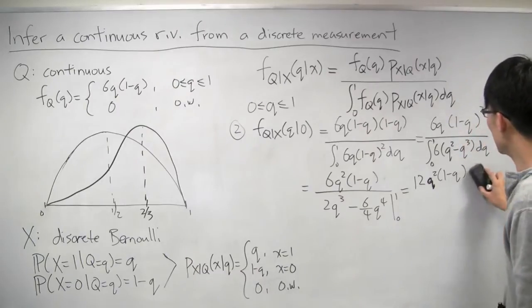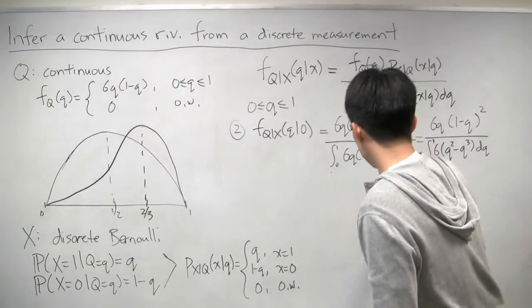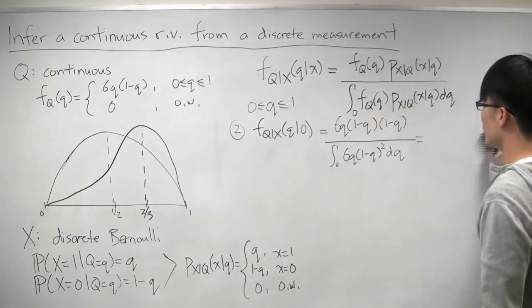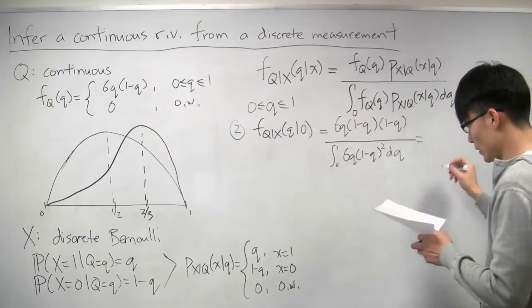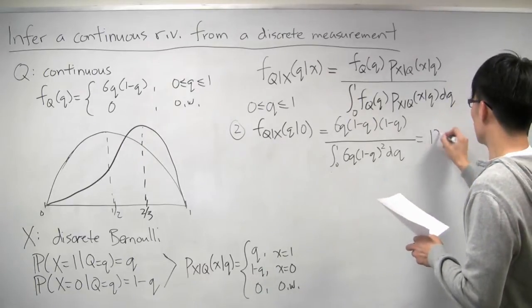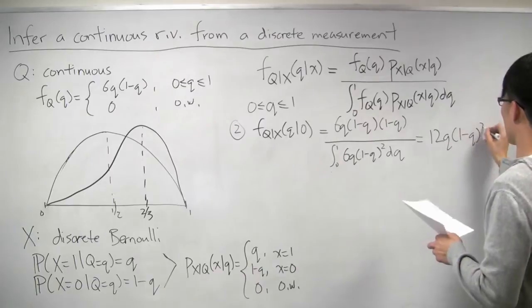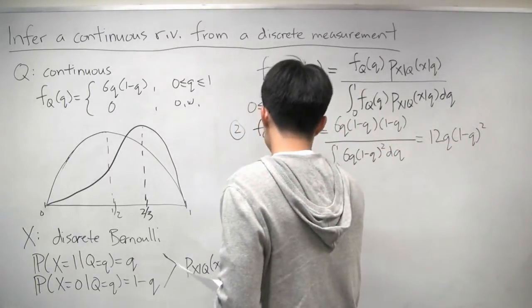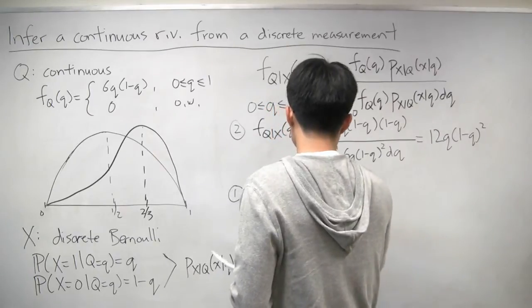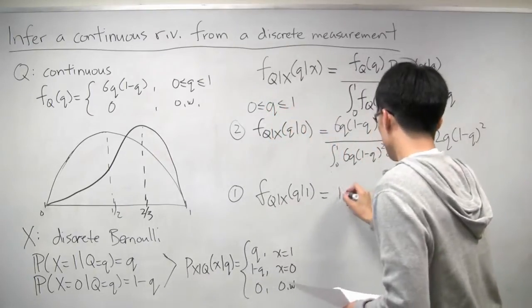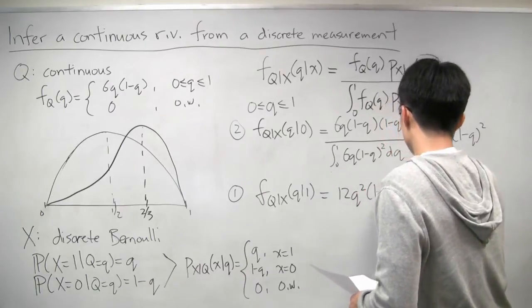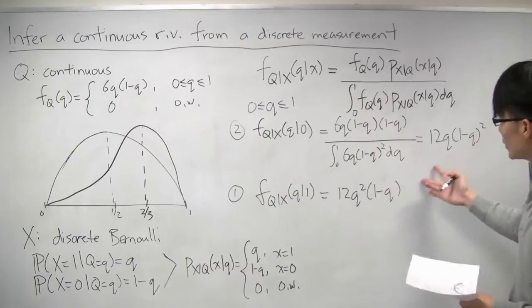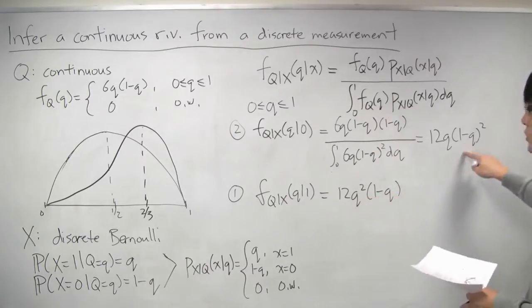And if you go through the same sort of calculus, what you get is that in this case, the answer is 12q 1 minus q squared. So let me rewrite what the first case was. The first case when x equals 1 was equal to 12q squared 1 minus q. So they look quite similar, except that this one has q squared. This one has 1 minus q squared.